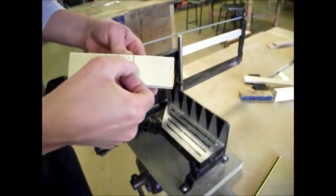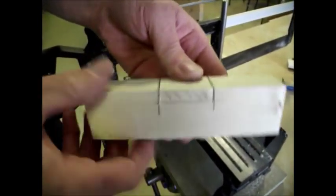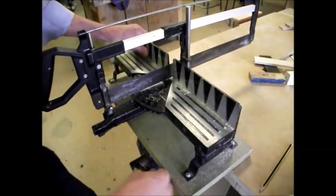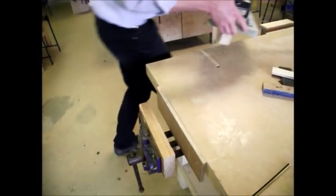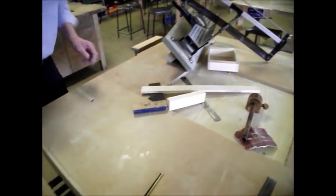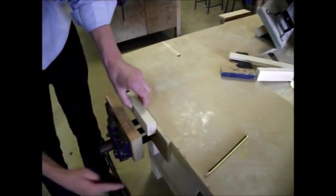Now what we need to do next is to chisel across there to remove this shaded piece. I'll take this out of the vise and we'll put our piece of work in the vise like that.